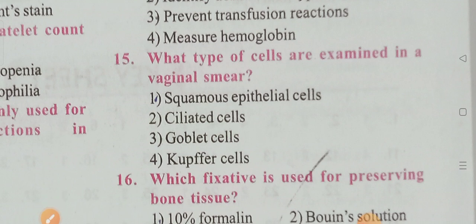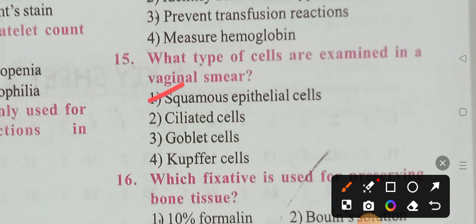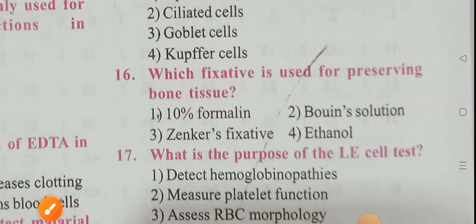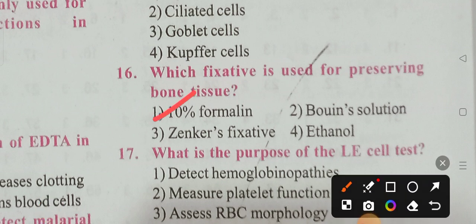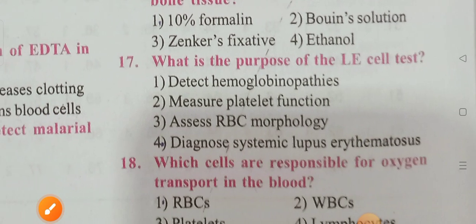What type of cells are examined in a vaginal smear? The answer is squamous epithelial cells. Which fixative is used for preserving bone tissue? Options: 10% formalin, Bouin's solution, Zenker's fixative, ethanol. Option 1 is the correct answer — 10% formalin is used for preserving bone tissue.